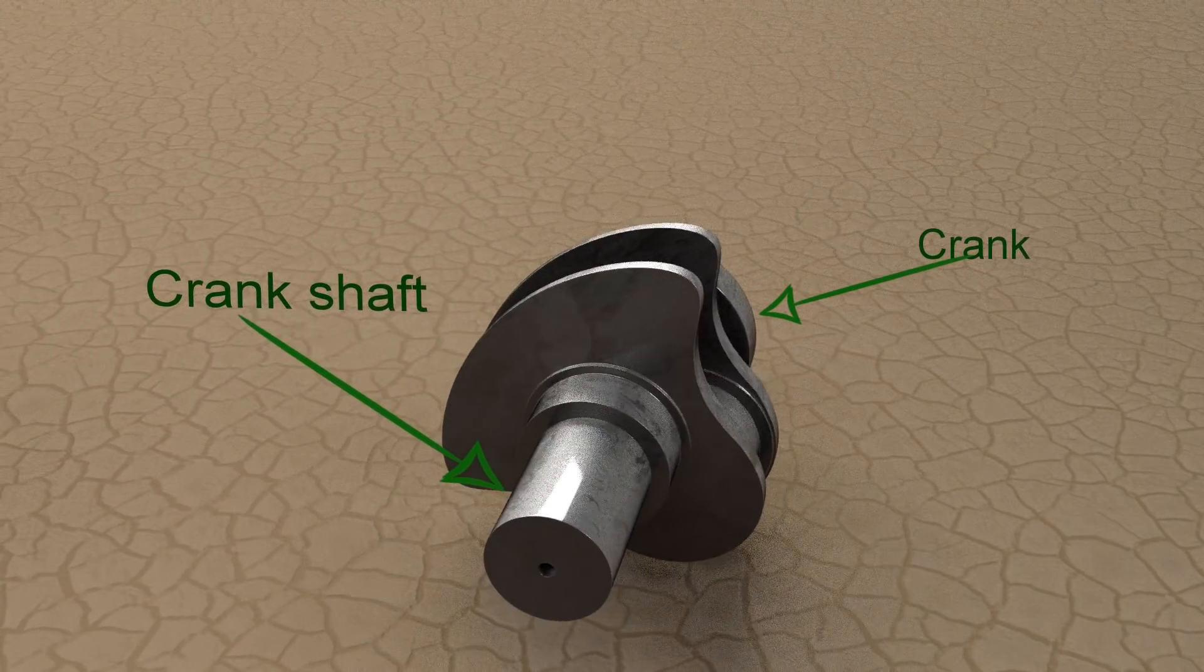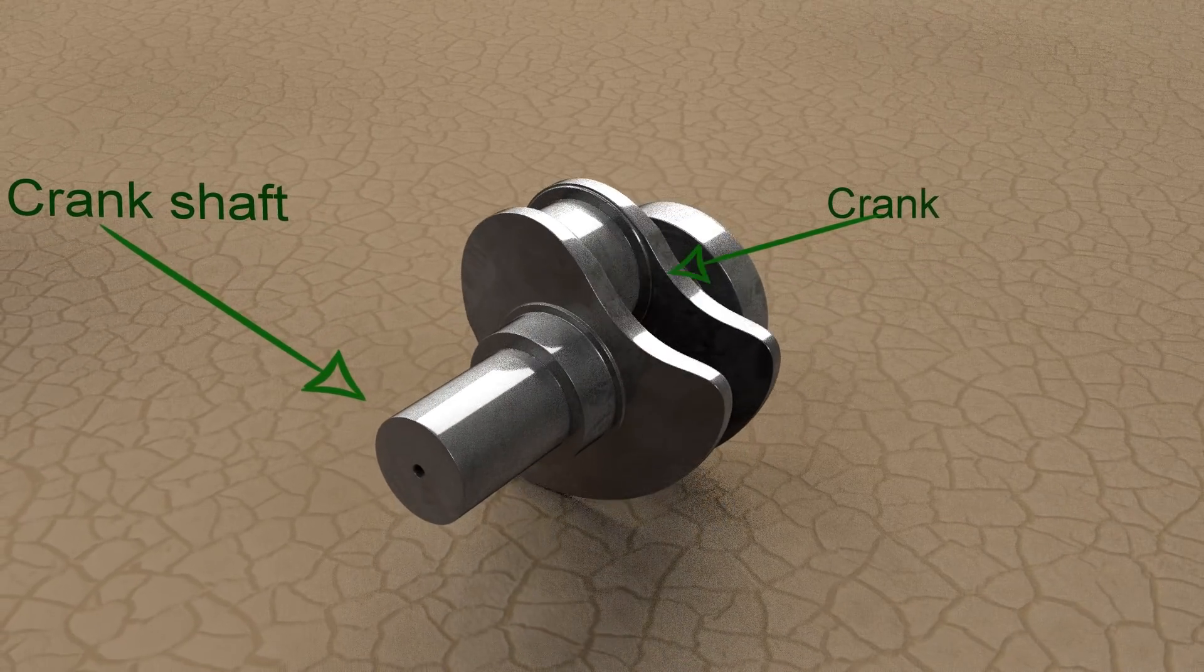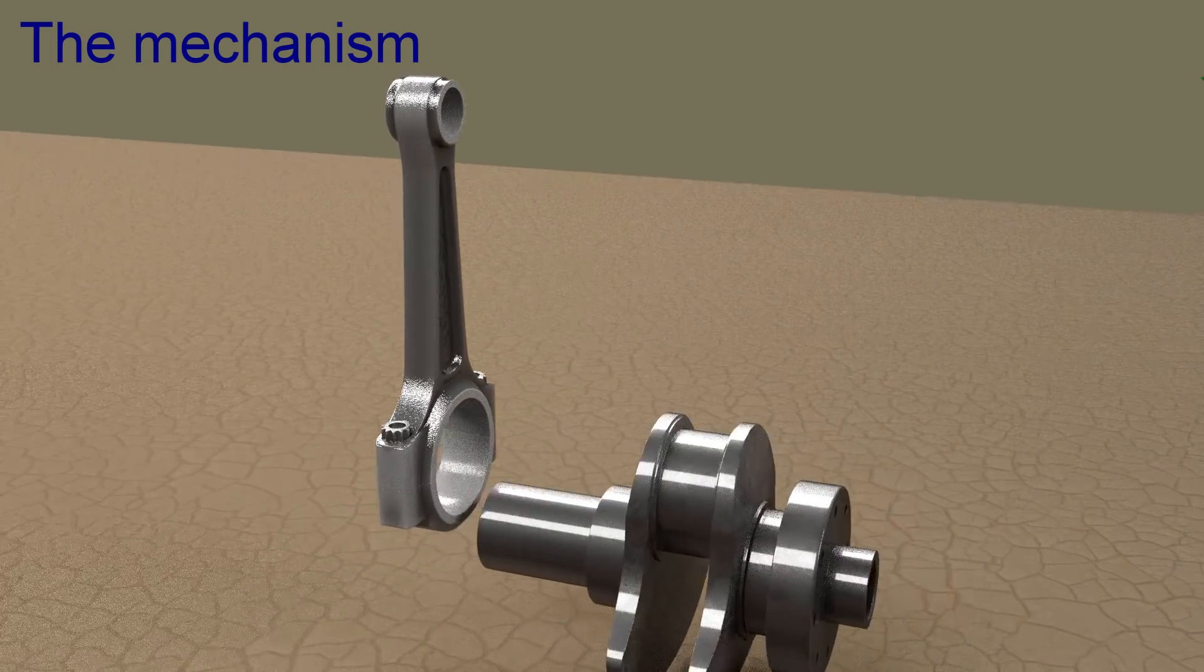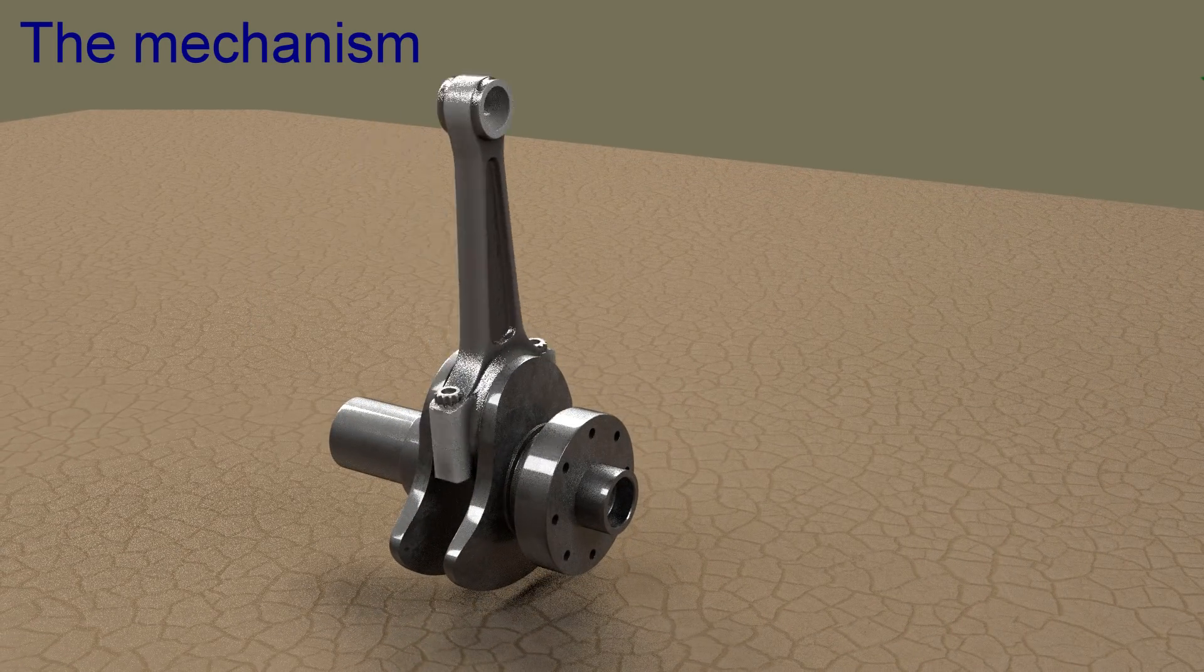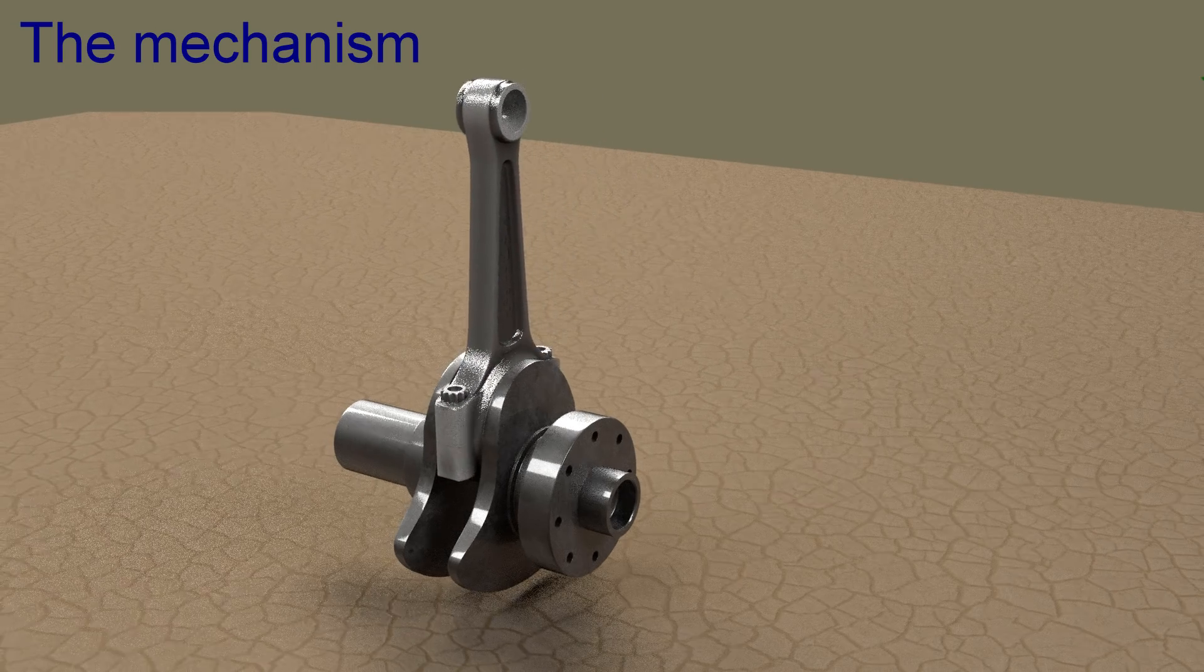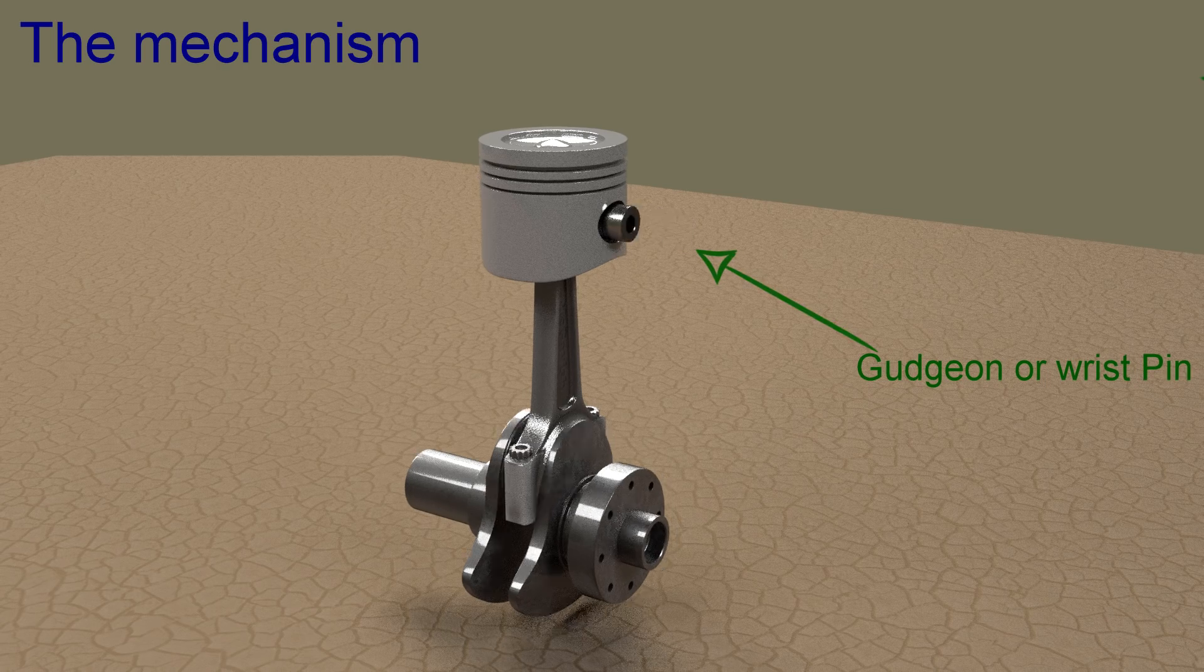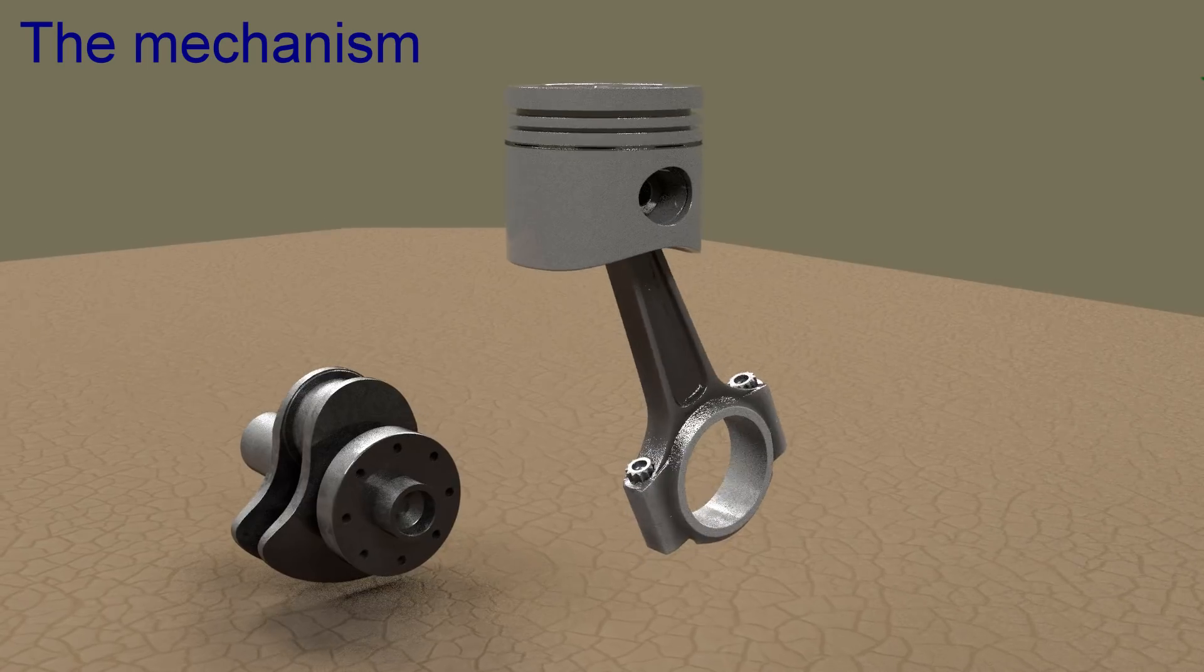Crankshaft converts the reciprocating motion of piston into useful rotary motion of the output shaft. The big end of the connecting rod connects to the crank and can freely rotate on the crank. The smaller end of connecting rod is connected to piston using gudgeon pin and the connecting rod can swivel around the gudgeon pin.